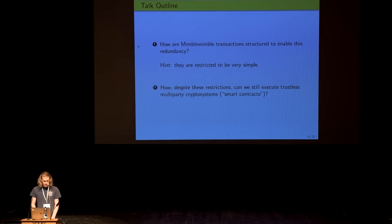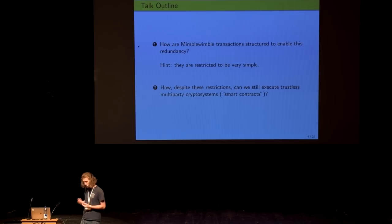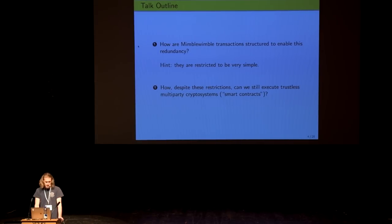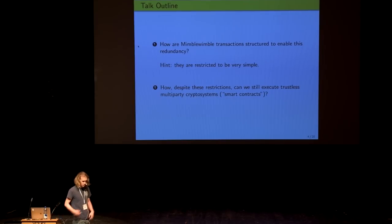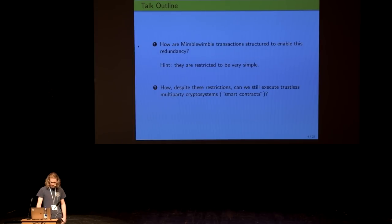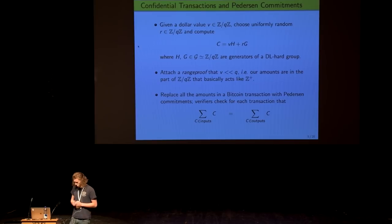So I want to talk about two things: Mimblewimble and Scriptless Scripts. The first, Mimblewimble, is how do we get this kind of compression. And the second thing is Scriptless Scripts, which is given this compression, which comes by restricting the transaction structure to be very simple and very highly structured, how can we still do anything interesting? The cool part of Bitcoin is not only that you can send coins around, but also that you can attach various conditions to their spending. You can look for hash preimages, you can do multi-signatures, you can do all sorts of fun stuff like this that let you do smart contracts.